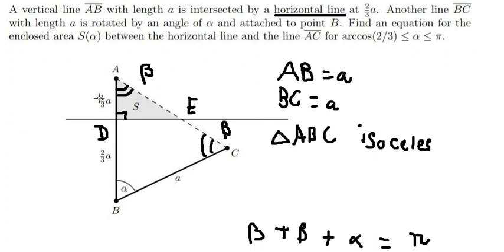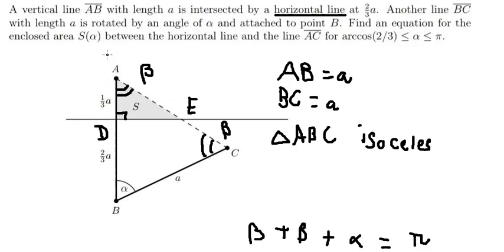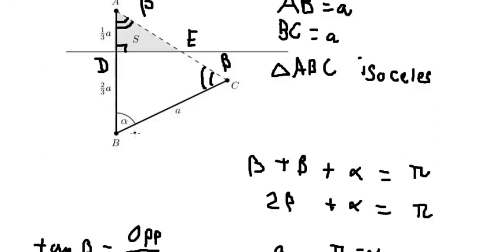After you got beta, we have (1/3)a and we can find this line DE. In this one we can use tan(β), which is opposite divided by adjacent. So adjacent is AD and DE is the opposite.